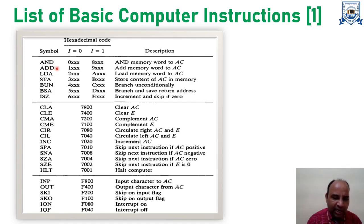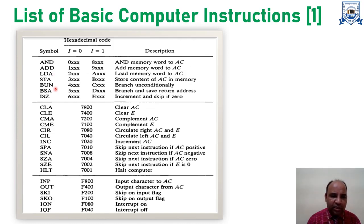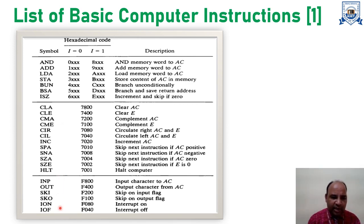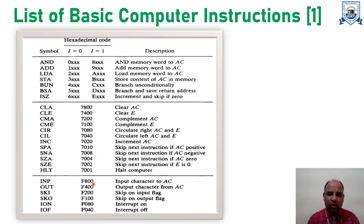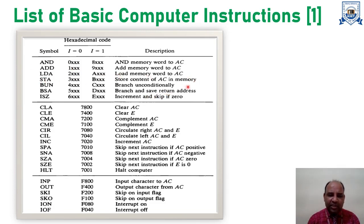Starting with the first instruction: AND — logical AND of memory word to the accumulator. Similarly there is ADD, the load operation (LD), store operation (ST), then going down: clear, complement, halt, and finally input, output, interrupt off, and interrupt on. These are the basic computer instructions with their hexadecimal codes and descriptions. The first category corresponds to memory reference instructions, the second to register reference instructions, and the third to input-output reference instructions.